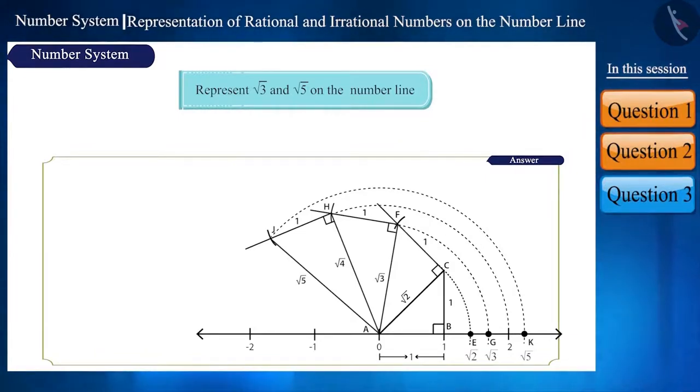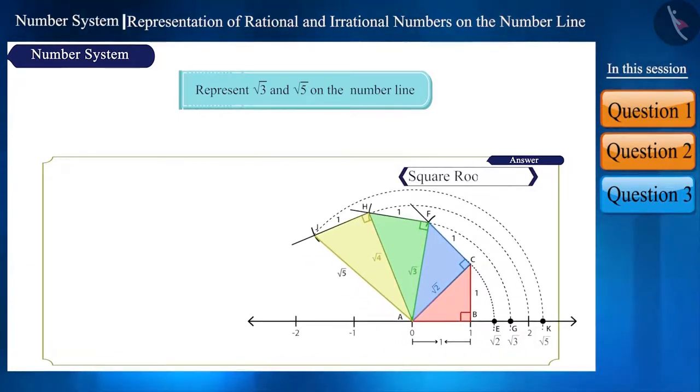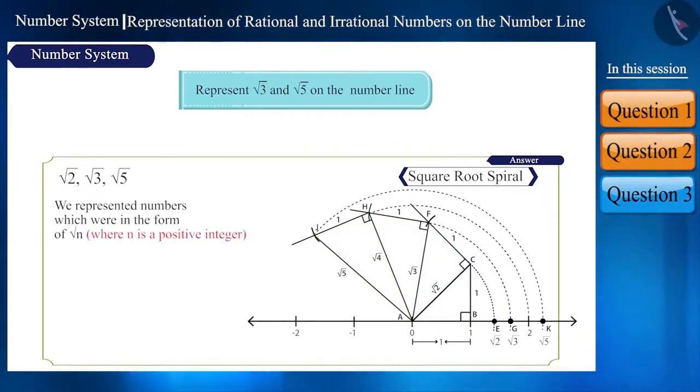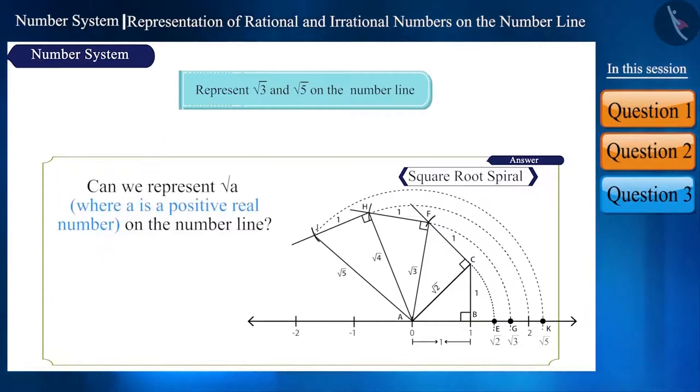The formation obtained as a result of this process is called the square root spiral. Friends, till now we represented numbers which were in the form of root N, where N is a positive integer.